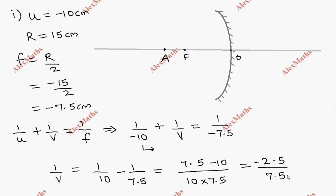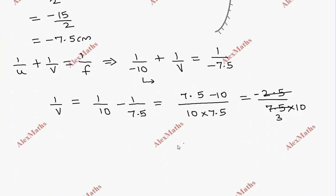After subtraction the numerator is 2.5 with a minus sign, divided by 10 multiplied by 7.5, which equals 75. Simplifying, we can cancel to get 1 by v equal to minus 1 by 30. Taking the reciprocal, v equals minus 30 centimeters.